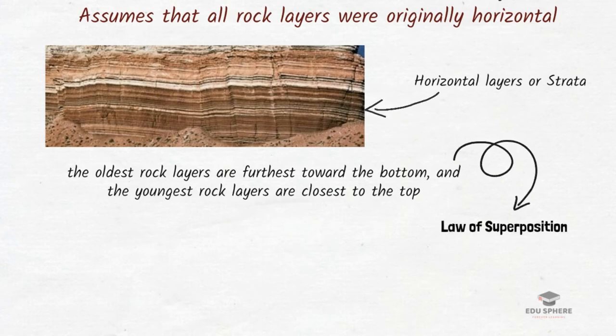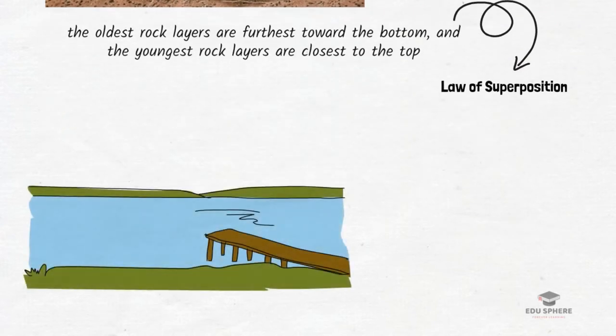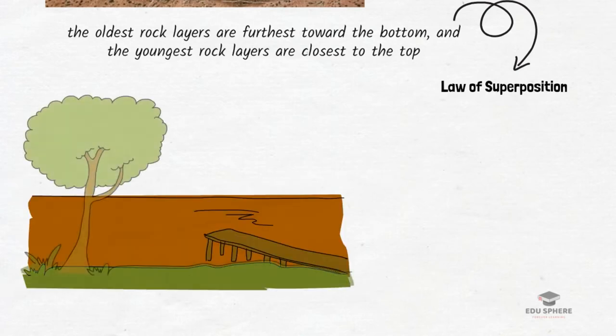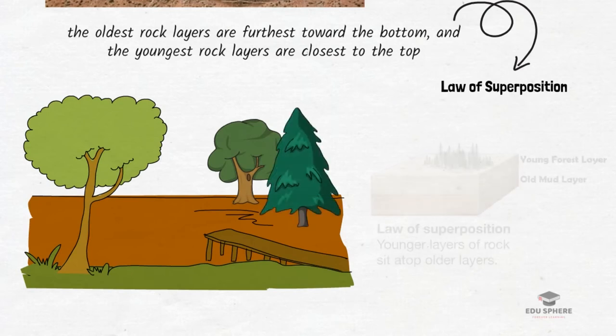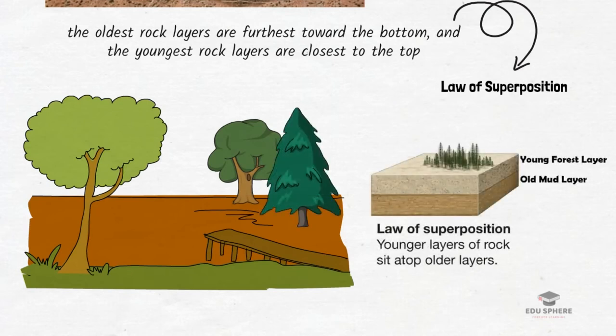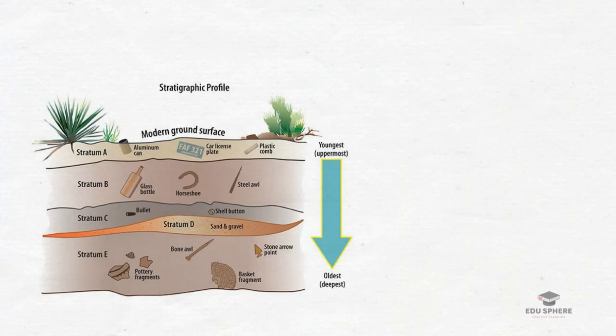This rule is called the law of superimposition. Say you have a layer of mud accumulating at the bottom of a lake. Then the lake dries up and a forest grows over it. More sediment accumulates from the leaf litter or the waste of forests until you have a second layer. The forest layer is younger than the mud layer and the mud layer is older than the forest layer. When scientists look at sedimentary rock strata, they essentially see a timeline stretching backwards through history. The highest layer tells them what happened more recently and the lowest layer tells them what happened longer ago.